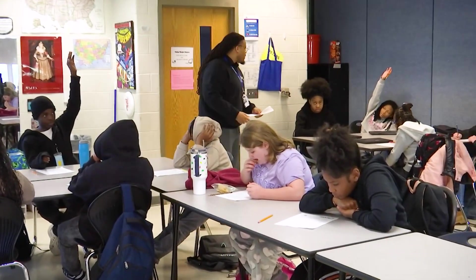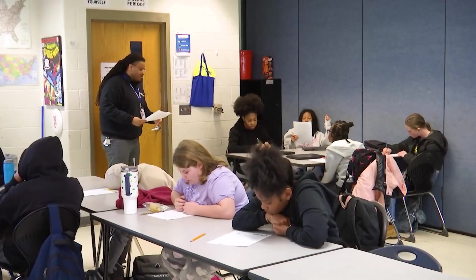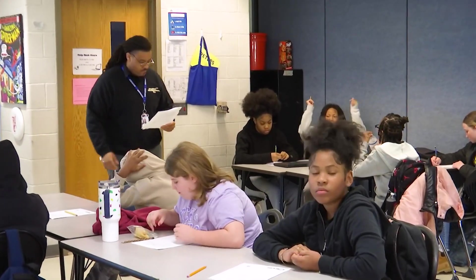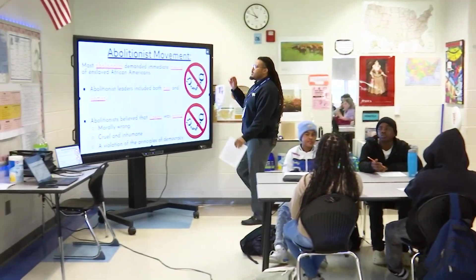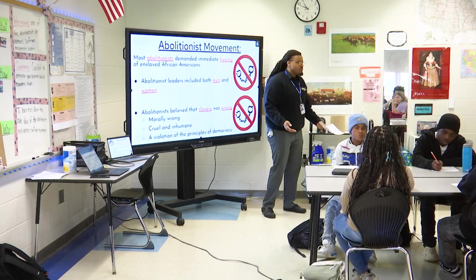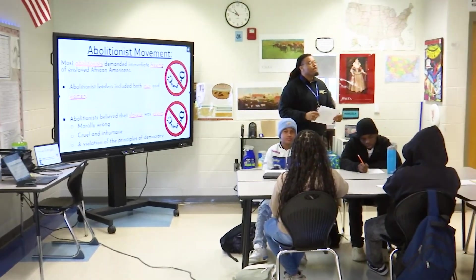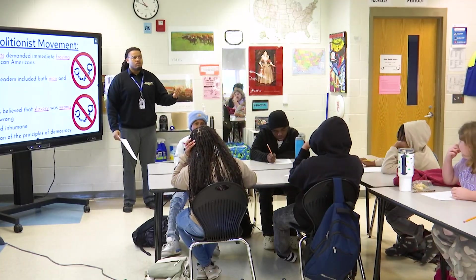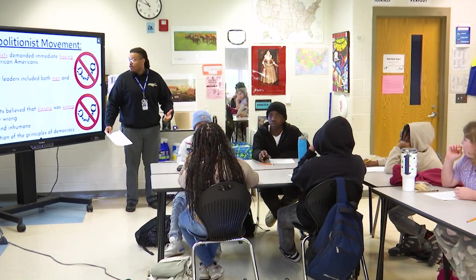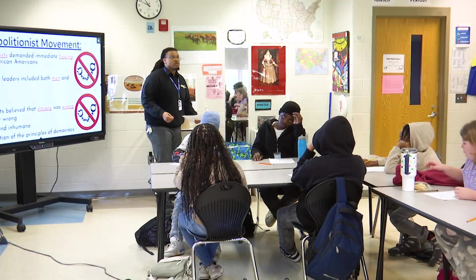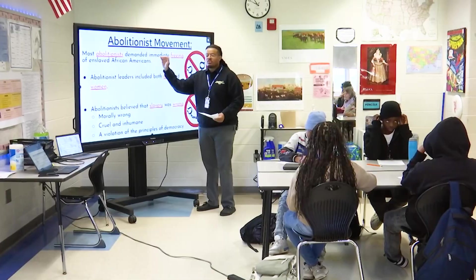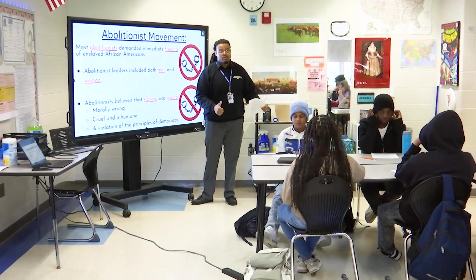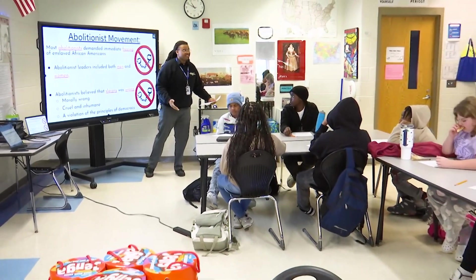Would anybody like to read the women's suffrage definition? Women's suffrage — a person who supported and worked for the right for women to vote and participate in elections. So students, when we look at the abolitionist movement, most abolitionists demanded the immediate freeing of enslaved African Americans. Abolitionist leaders included both men and women — it wasn't just men, it wasn't just women, it was both. They believed that slavery was wrong, morally wrong, cruel and inhumane — the way slaves were treated. And it was a violation of the principles of democracy. So abolitionists are going to work for the immediate freeing of enslaved African Americans.